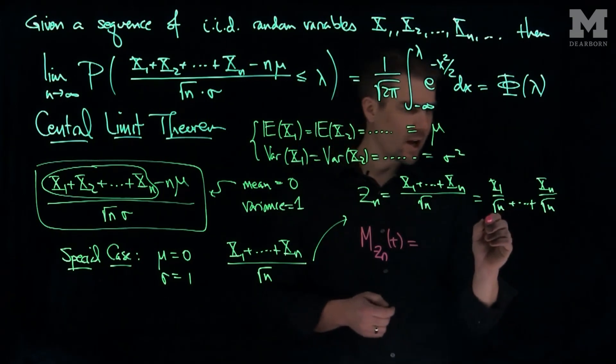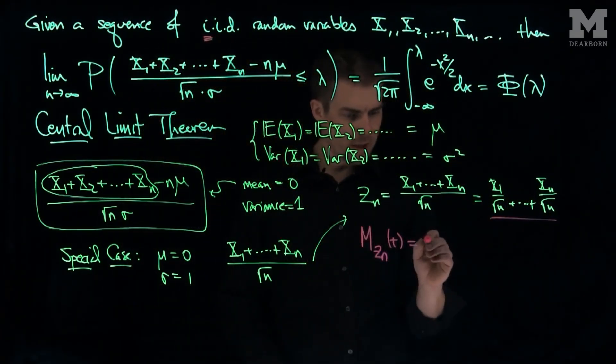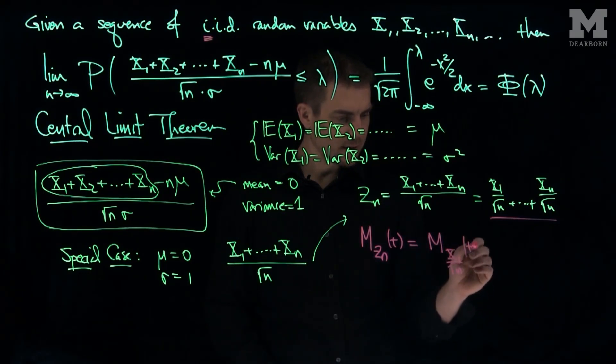That will be what? Since I have the sum of independent random variables, it will be the moment generating function of x1 over the square root of n at t.